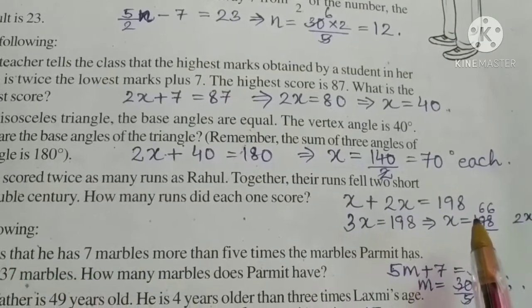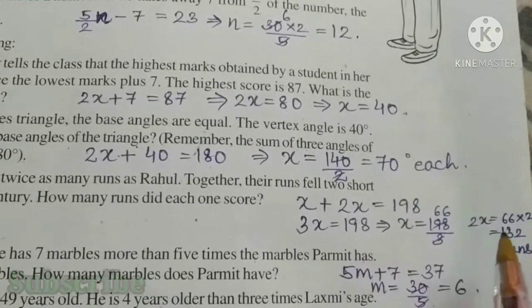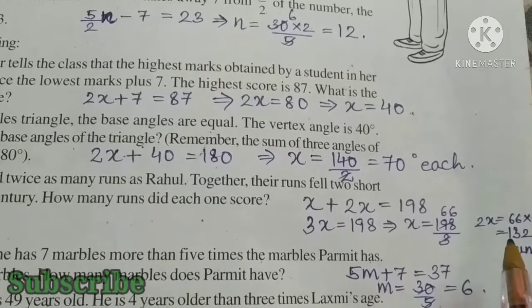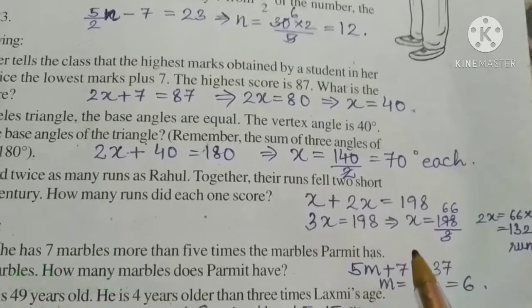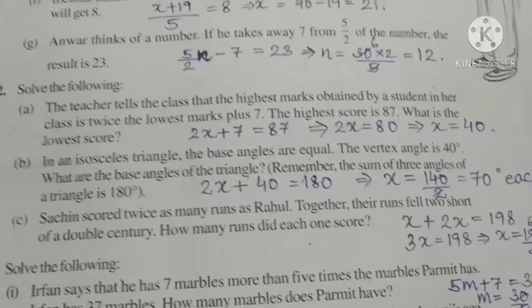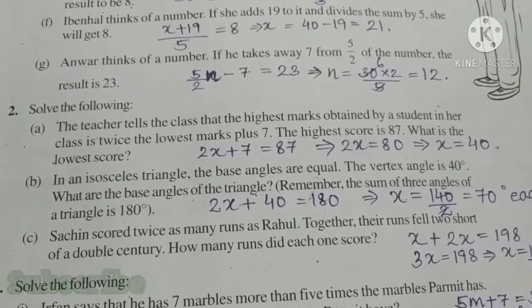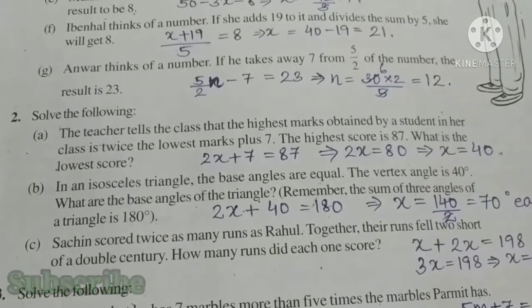Rahul's score is 66. And Sachin's score 66 into 2. That is 132 runs. So, this question is finished. Thanks for watching. Please like, share and subscribe my channel.